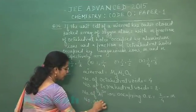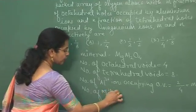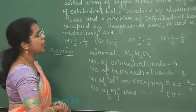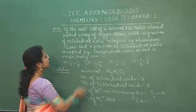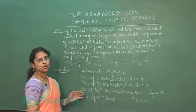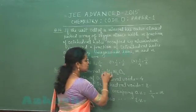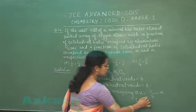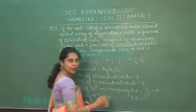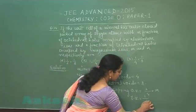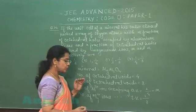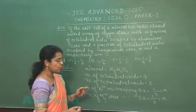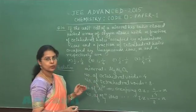Now for the number of magnesium ions occupying tetrahedral voids — this fraction is marked as N. In this unit cell there is only one magnesium ion. So one magnesium ion will occupy only one void, and the total number of tetrahedral voids is 8. So the fraction N is 1/8. Therefore M is 2/4, which means 1/2, and N is 1/8.